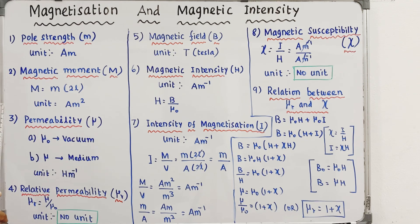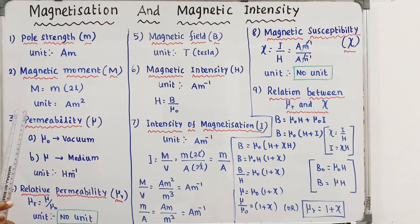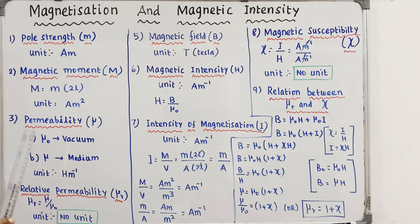In electrostatics, the equivalent component is the capacitor rather than the inductor. Just as inductance has the unit Henry in magnetostatics, the capacitor is the analogous component in electrostatics.